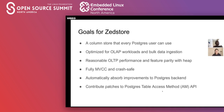Keeping ZStore a strict implementation of the table AM API means we can benefit from other improvements to Postgres without having to change ZStore's code. At the same time, we want to be able to contribute to the table AM API and make it better while we're developing ZStore. That's a nice side goal.